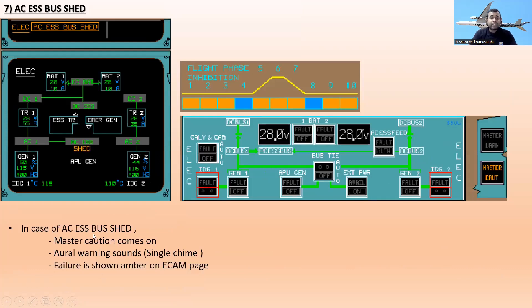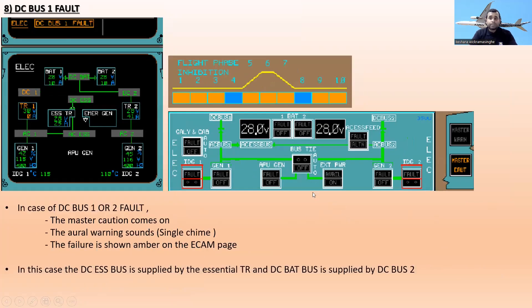The next one is AC essential bus shed. In case of AC essential bus shed, master caution comes on with a single chime oral warning, and the failure is shown amber on the ECAM page. You can see AC essential shed fault in amber color, and also the DC essential bus shed fault is shown.